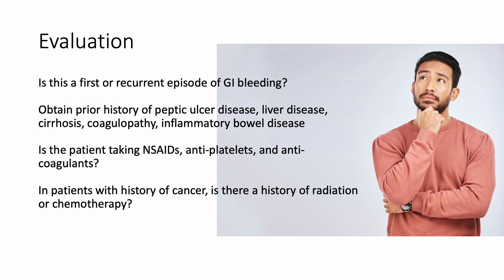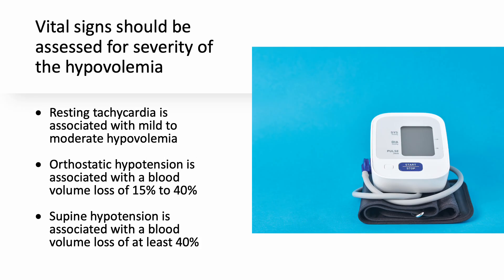In patients with history of cancer, is there a history of radiation therapy or chemotherapy? Vital signs should be assessed for severity of hypovolemia. Resting tachycardia is associated with mild to moderate hypovolemia. Orthostatic hypotension is associated with blood volume loss of at least 15%, and supine hypotension is associated with a blood volume loss of at least 40%.